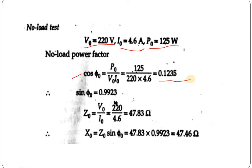Remember that the power factor of a single-phase induction motor, or any induction motor, is lagging in nature because it is based on the principle of induction. That means the power factor will always be lower and lagging in this case. Here we have got the power factor value as 0.12, which means it is very much lagging. Now we will calculate the sin φ0 value. By taking the cos inverse of 0.1235 we get the angle φ0, and putting that into sin we get sin φ0 equals 0.9923.